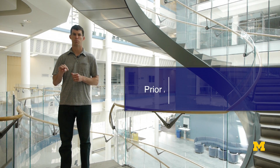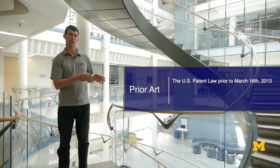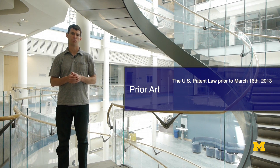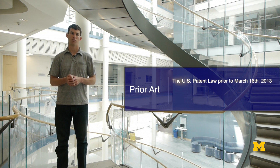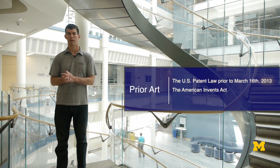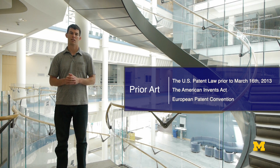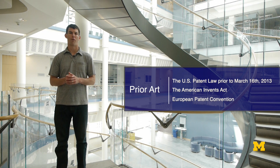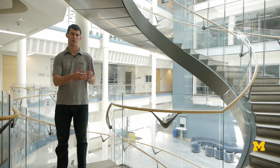We're going to look at three specific definitions of prior art. One is United States Patent Law prior to March 16, 2013 — this should be the law for any patent applications filed before that date. The other would be the new law under the American Invents Act, covering patent applications filed after March 16, 2013. And the other we'll look at is the law in Europe, because patent laws in different countries differ from the United States, and people often care about the ability to get patents in jurisdictions important to their business, such as Europe.